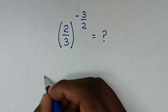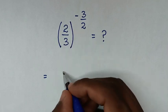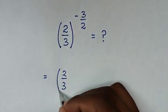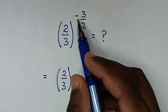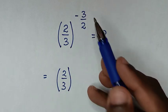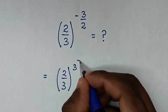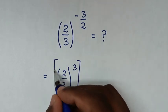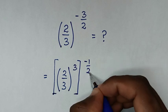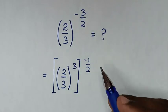So it will be equal to this base of 2 over 3, bracket, power of negative 3 over 2. We will take power of 3 inside the bracket, so it will be power of 3 inside, then bracket power of negative 1 half, because negative 1 half times 3 is negative 3 over 2.